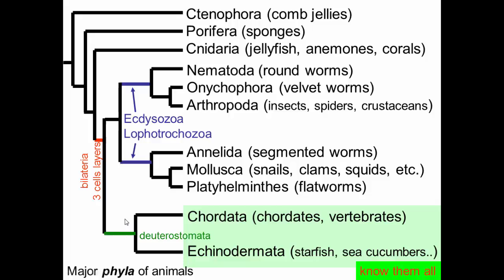This is also interesting because if we want to learn about chordates — like us — and we're interested in studying their development, it actually makes a lot more sense to study the development of echinoderms before we would go and study the development of, say, worms or insects. While we know a lot about the development of drosophila, it's less likely that drosophila will develop in the same ways that echinoderms do in terms of being comparable to humans.